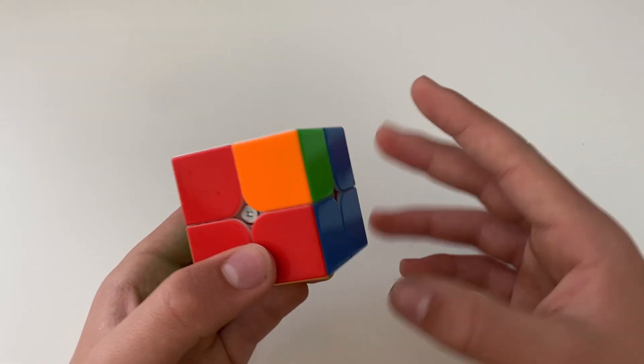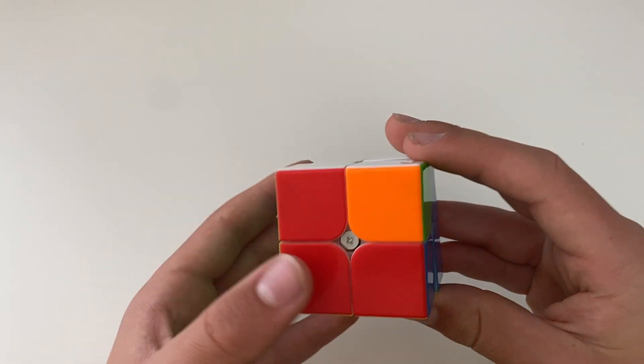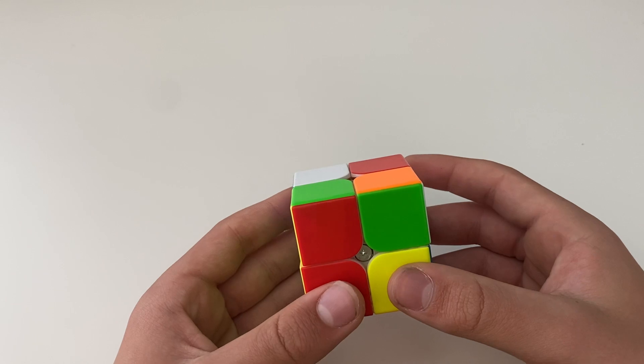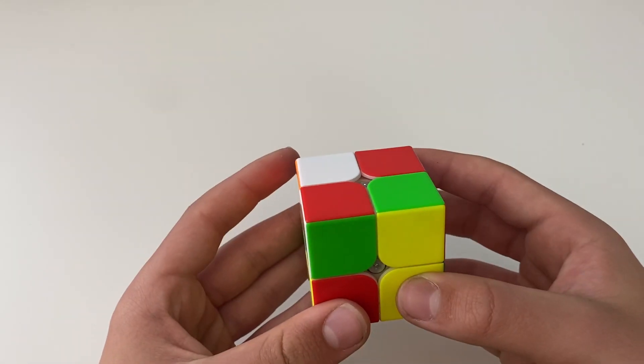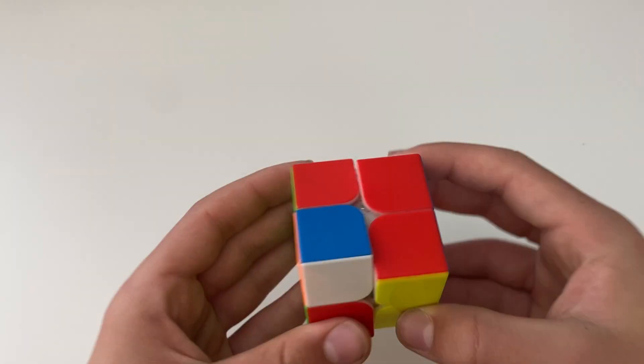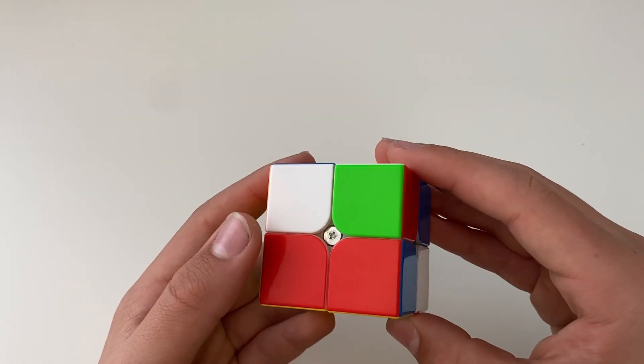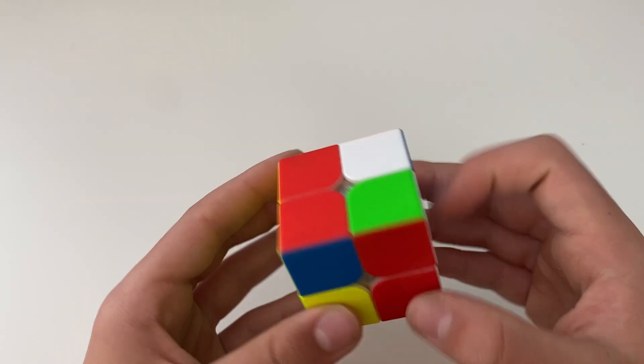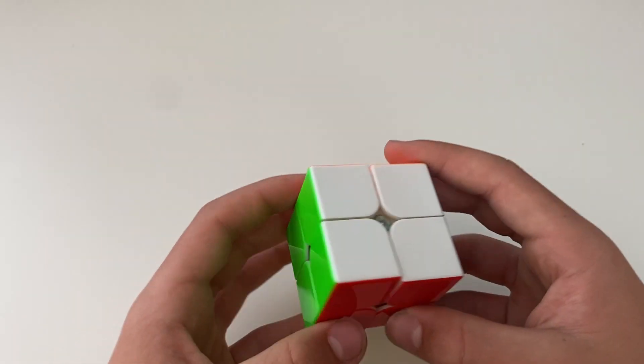So this algorithm is F, R, U', R', U', and then F', R, U, R', U', R', and then we're going to do F, and then R, and then an F'. And that will solve that case.